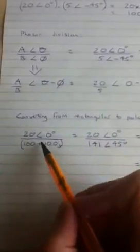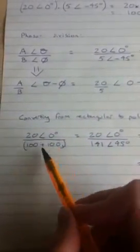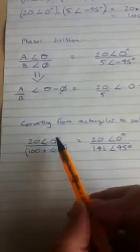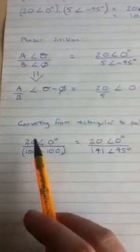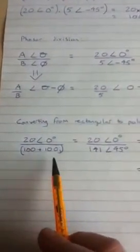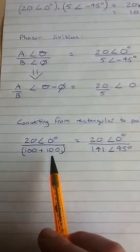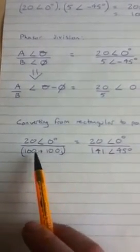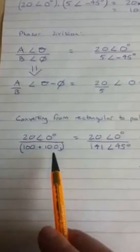The final thing relating a little bit to these phasor forms of numbers is converting from rectangular to polar. So this is one of the questions or similar to one of the questions in the lecture notes that I was being asked about. So the top one, we've got 20 at an angle of 0 degrees. It's just a number I picked from up here. So we can deal with this. We're happy with this. This time on the bottom, we've got our number in rectangular form. So it's got 100 plus 100j. So that's 100 in the real domain and 100 in the imaginary domain.